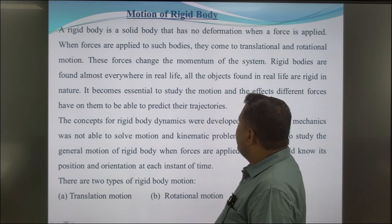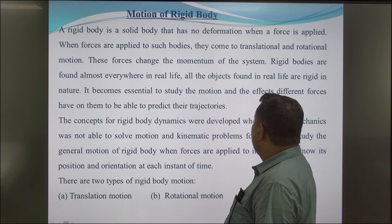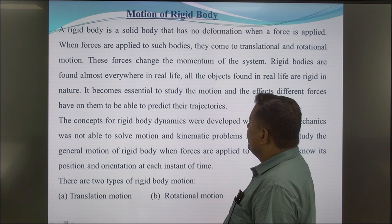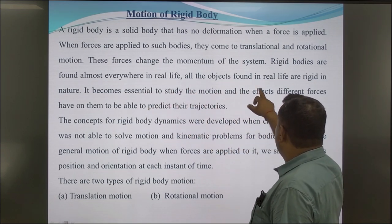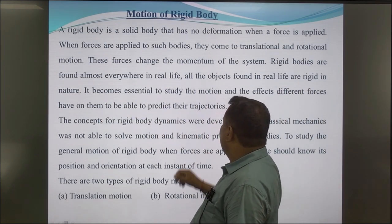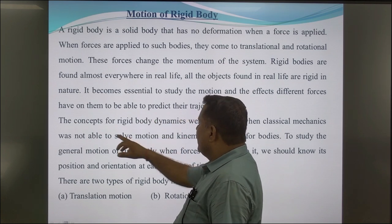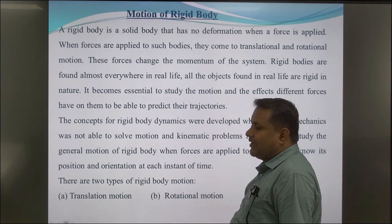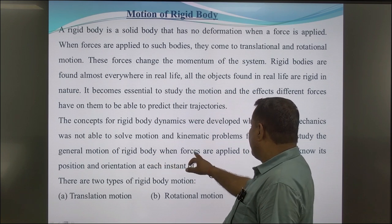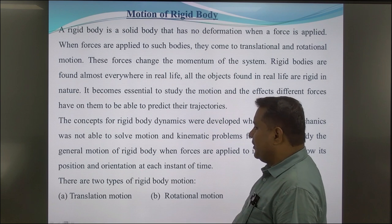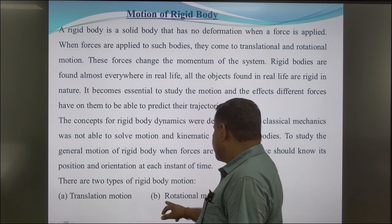Motion of a rigid body. A rigid body is a solid body that has no deformation when a force is applied. When forces are applied to such bodies, they undergo translational and rotational motion. These forces change the momentum of the system. Rigid bodies are found almost everywhere in real life. It becomes essential to study the motion and the effect different forces have on them to predict their trajectories. To study the general motion of a rigid body when forces are applied to it, we must know its position and orientation at any instant of time. There are two types of rigid body motion: first, translational motion; second, rotational motion.